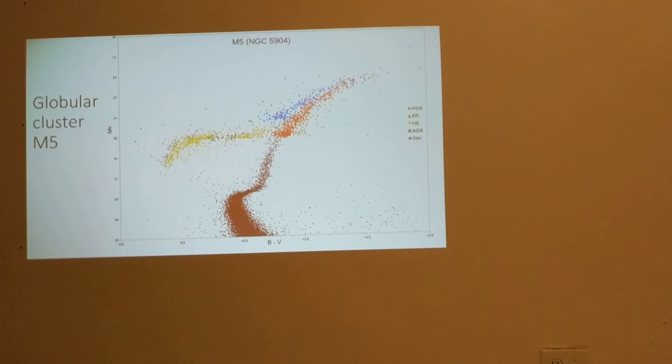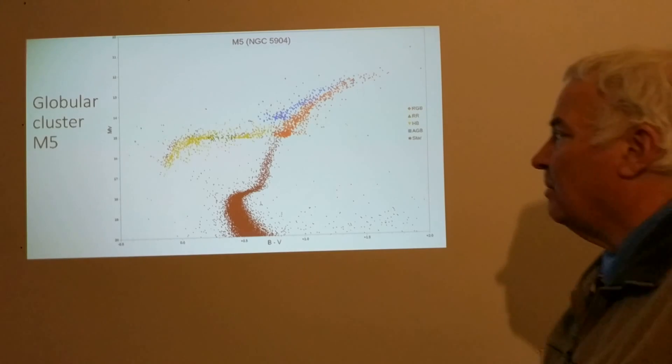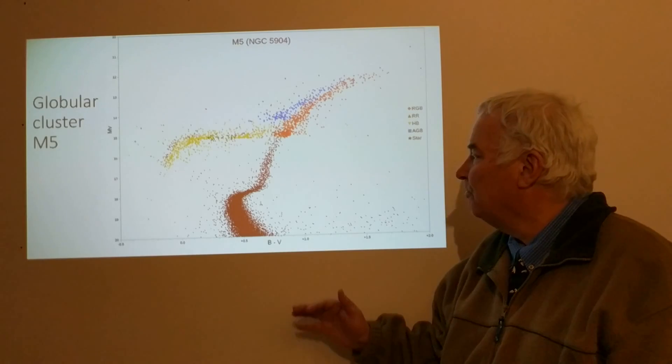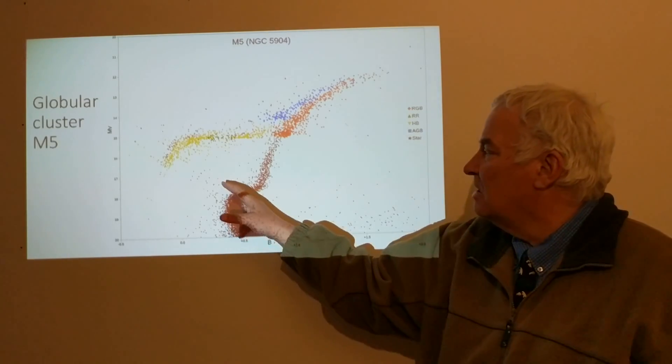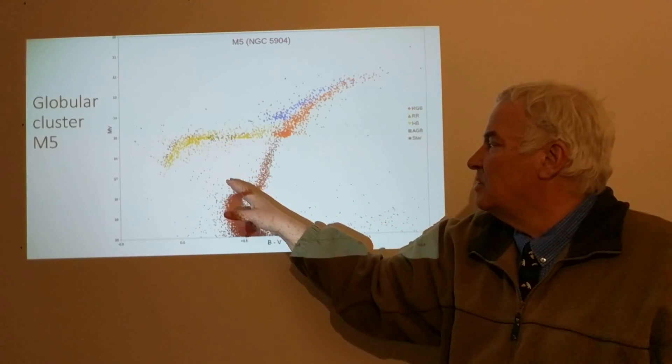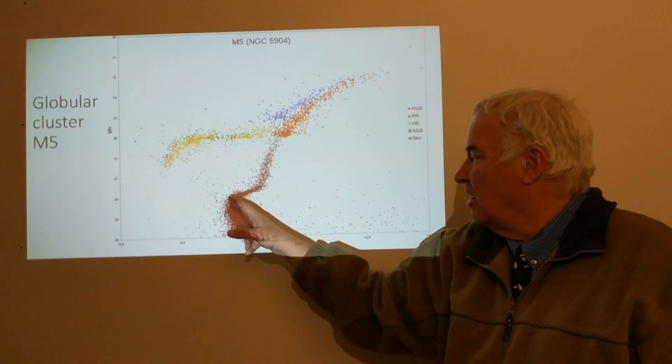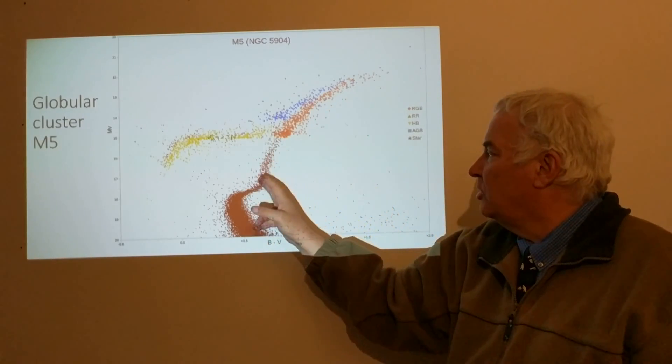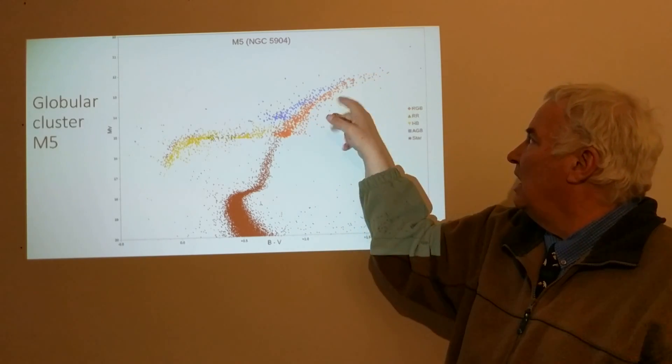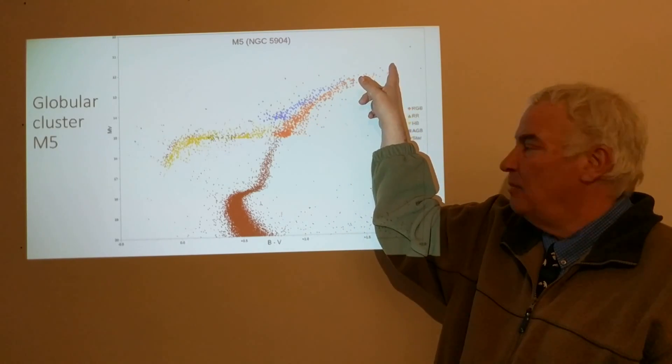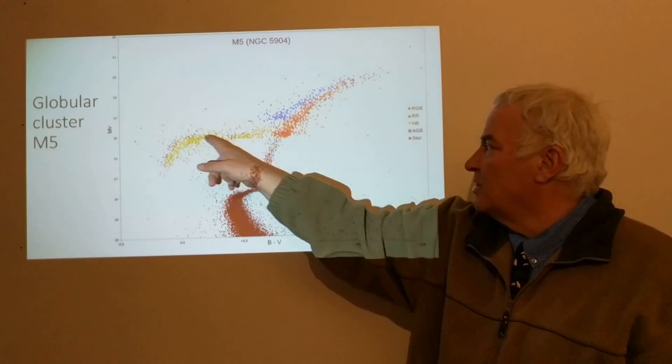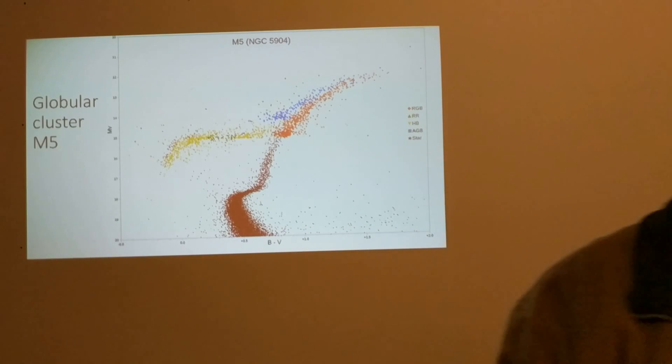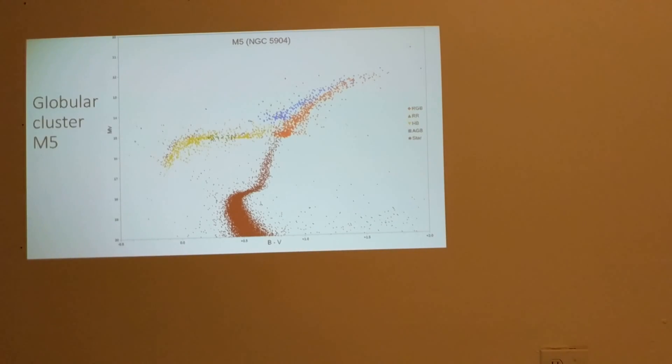The helium flash on the HR diagram is seen here. This is a globular cluster M5. All of these stars are the same age. The stars in the main sequence, most of them are gone in this part of the main sequence. Down here we have the remaining main sequence stars, but others have become giants. This is the red giant branch. The helium flash is at the very top of the red giant branch, and then it comes down for the horizontal branch as we see here.